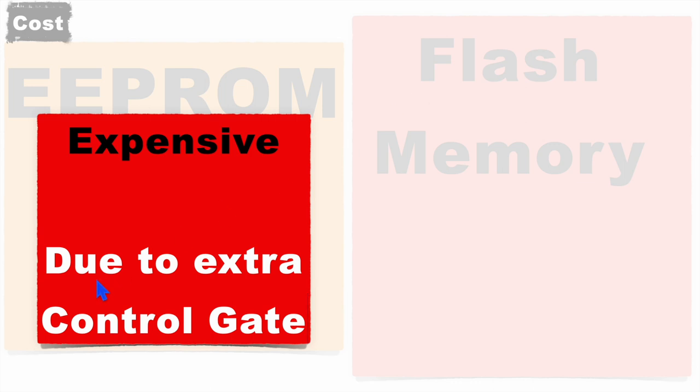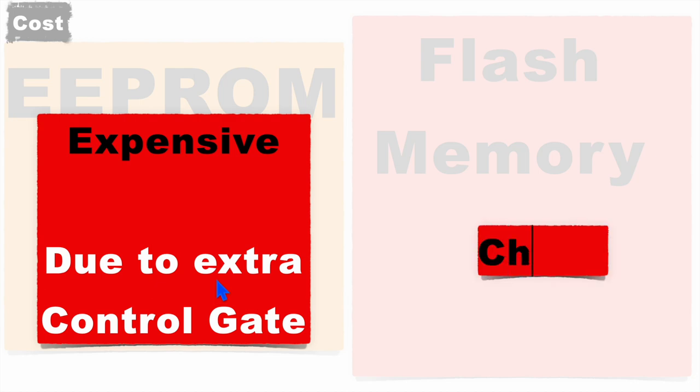Next, if we look at the cost of these two, EEPROM memory is a bit more expensive than flash memory because it has one extra gate, while flash memories are relatively cheaper.